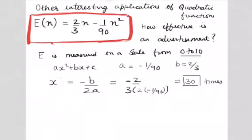So this is an equation, a quadratic function E(n) equals 2/3 n minus 1/90 n squared. E stands for the effectiveness of the advertisement. E is a number between 0 and 10. The closer it is to 10 the more effective it is, and the closer it is to 0 the less effective it is.